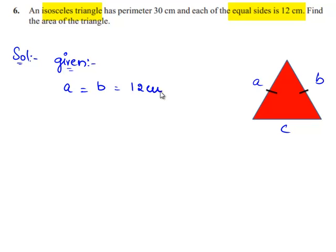Given equal sides of the isosceles triangle, from the figure A is equal to B is equal to 12 cm and also perimeter of the triangle is equal to 30 cm.